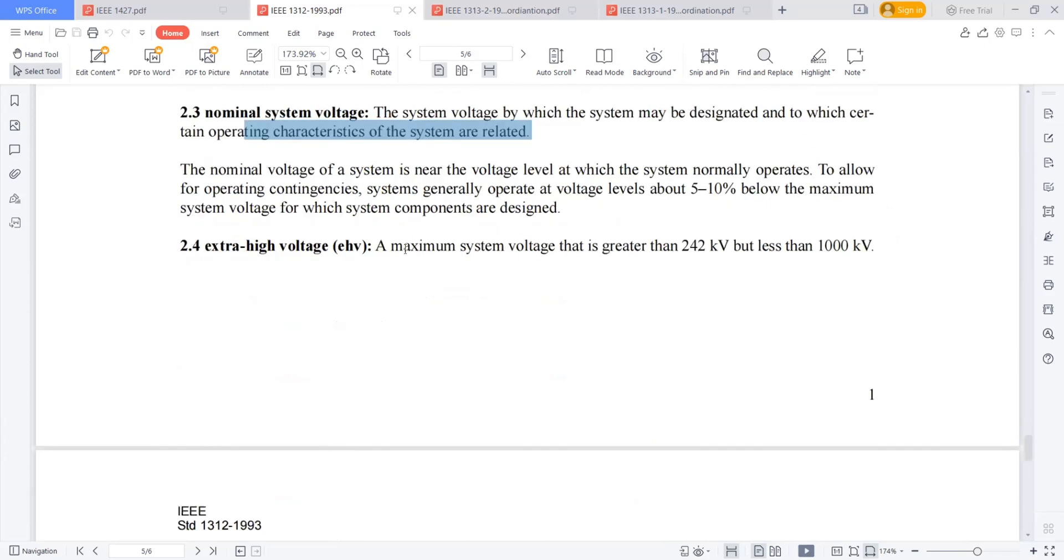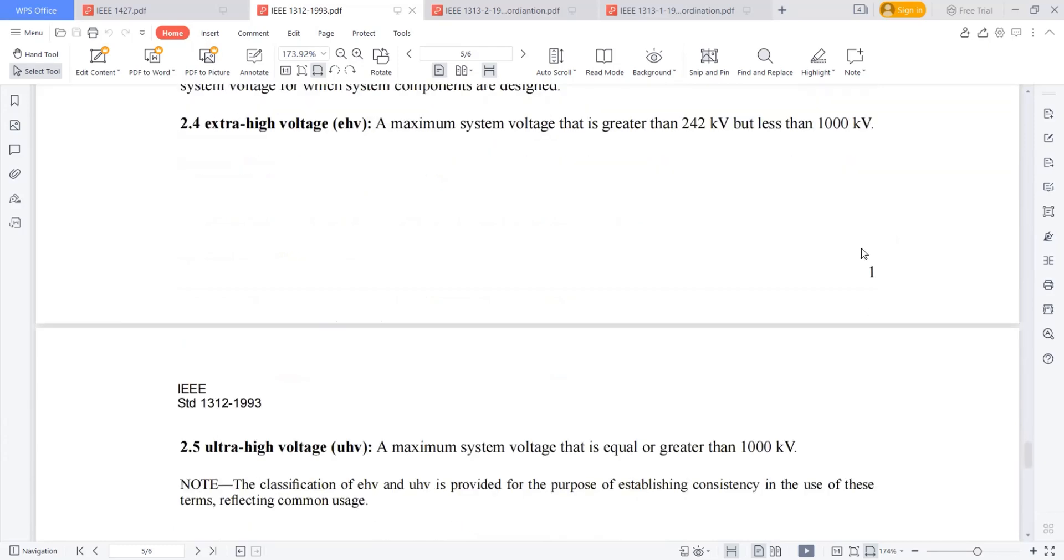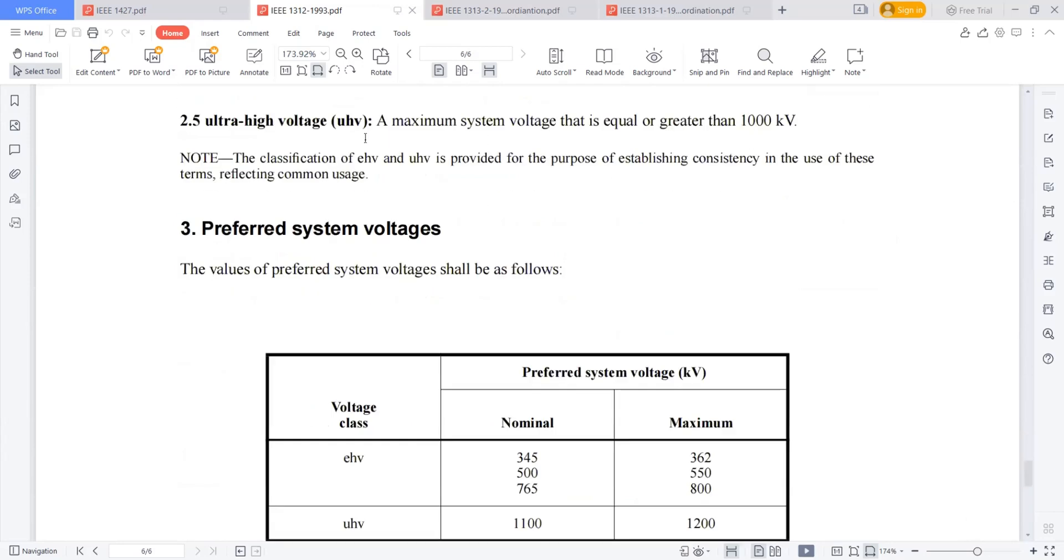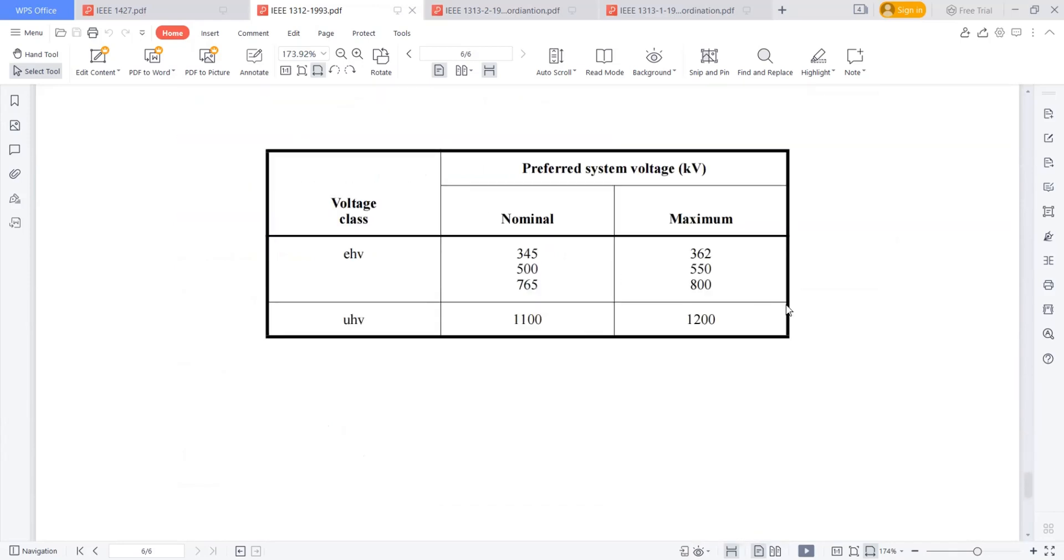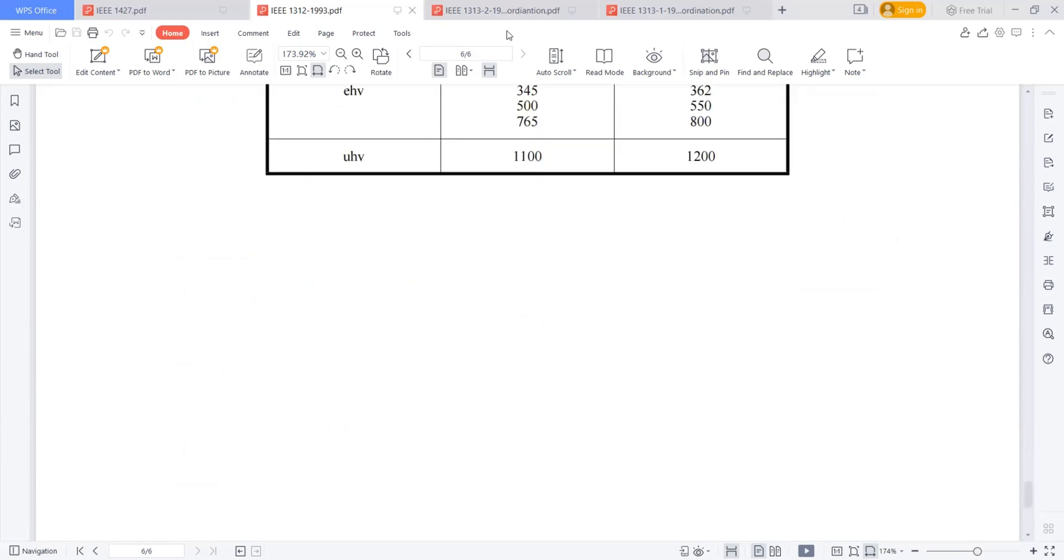Extra high voltage systems is generally called if my voltage level is greater than 242 kV and less than 1000 kV. The 400 kV is extra high voltage system. And above 1000 kV, it's an ultra high voltage system.